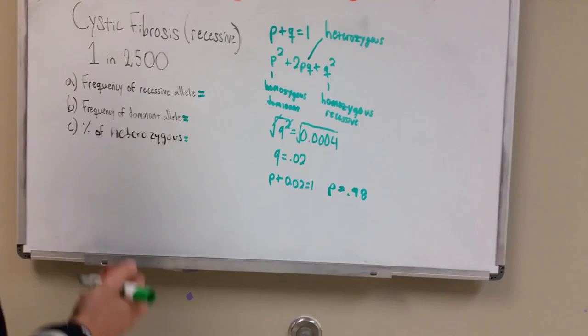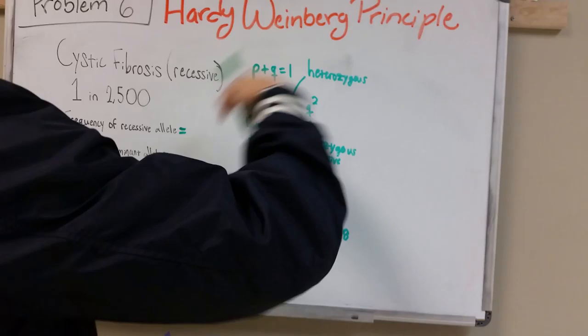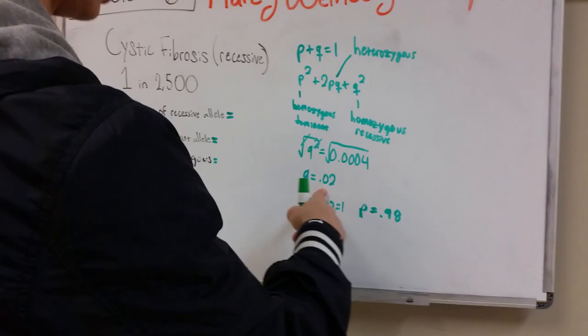And then for the heterozygous, since now you have P and you have Q, you can find this one, which is asking for the P and the Q. So you plug it in, 2 times 0.98 times 0.02 will give you around 4% or 0.04.